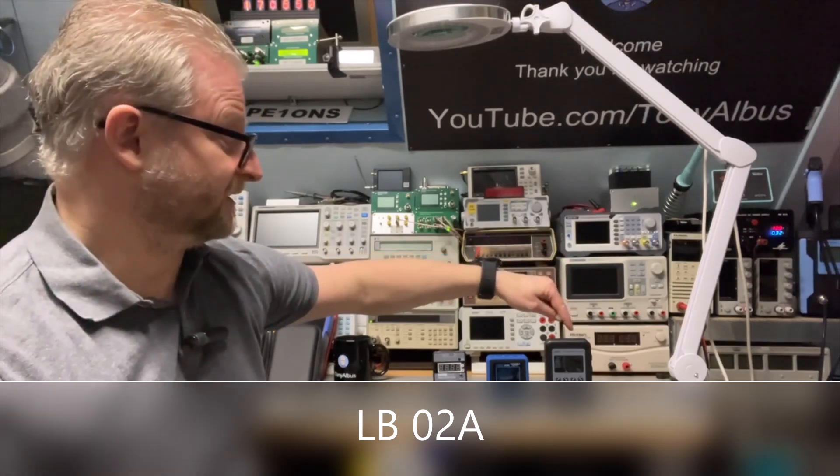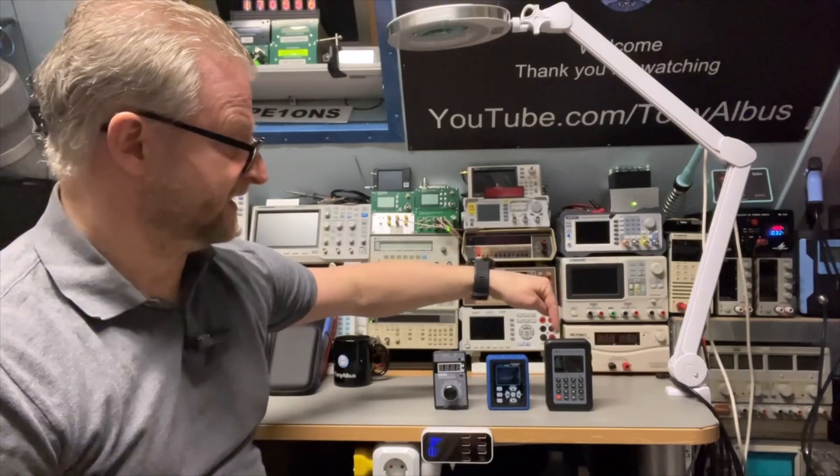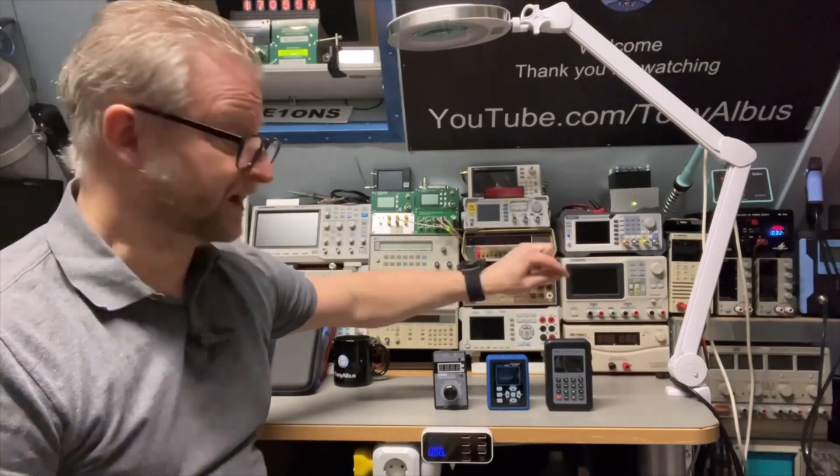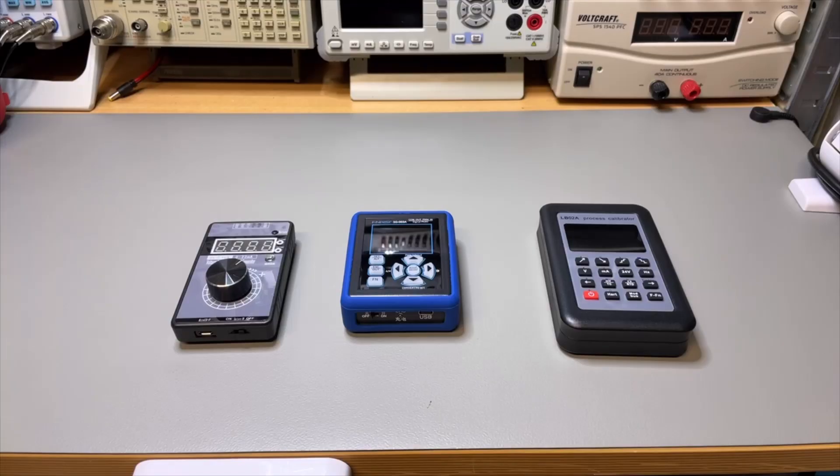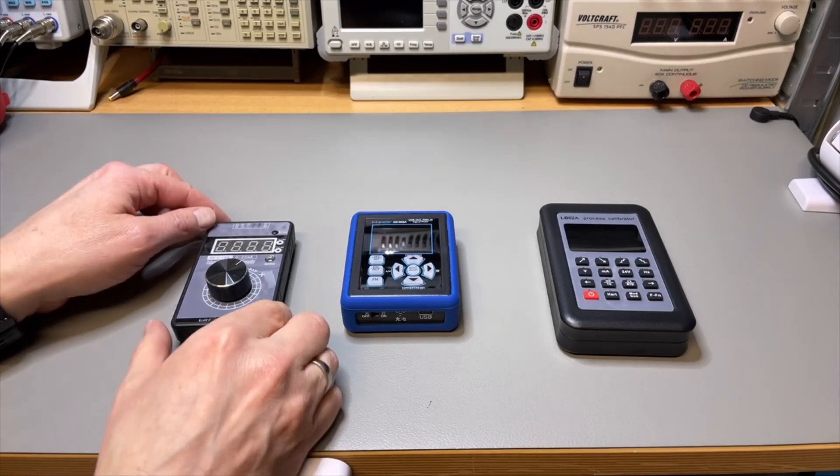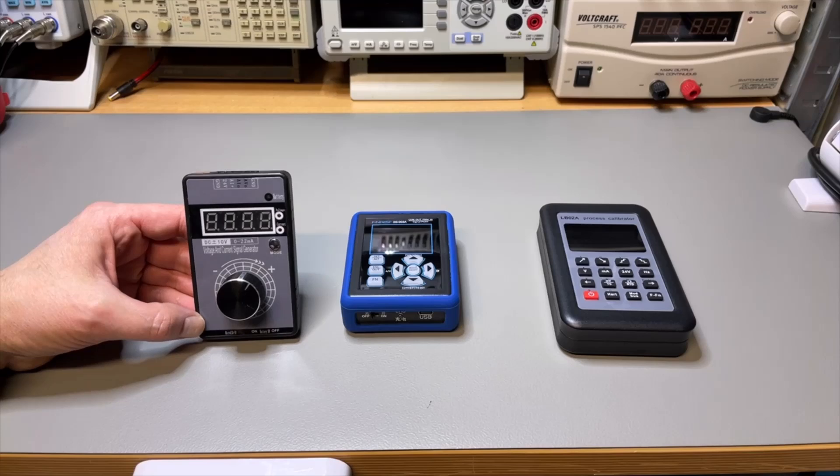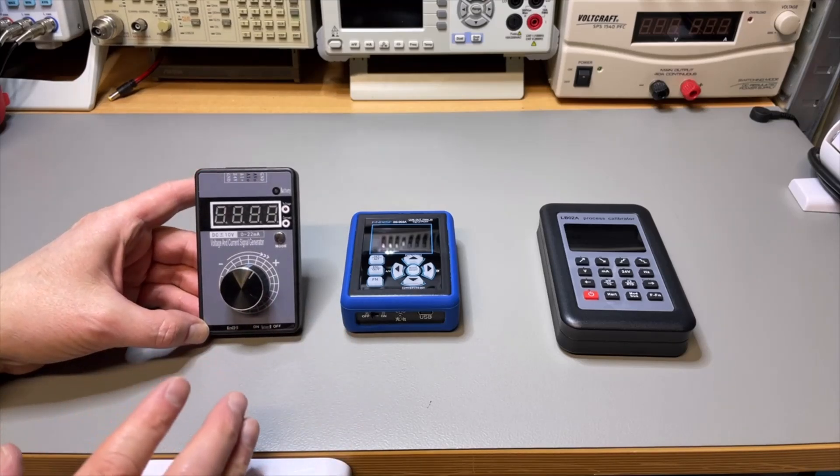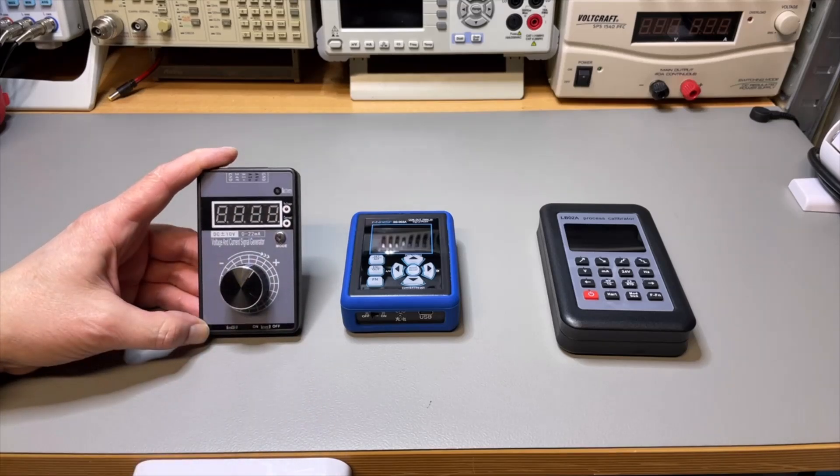This is the LB02A. There are two other models that look exactly like this one - the normal LB02 which has lower accuracy. So here we have all three. This is the first one, the LB02G, the G version, and this is the most simple one. It's the version with the battery and you can adjust from 0 volts to 10 volts and even to minus 10 volts, and for the current you can do 0 to 22 milliamps.